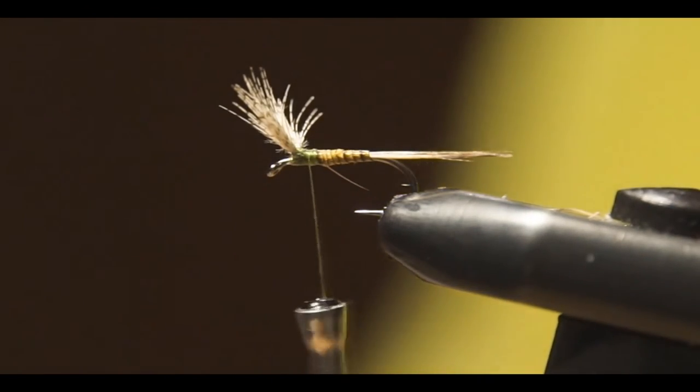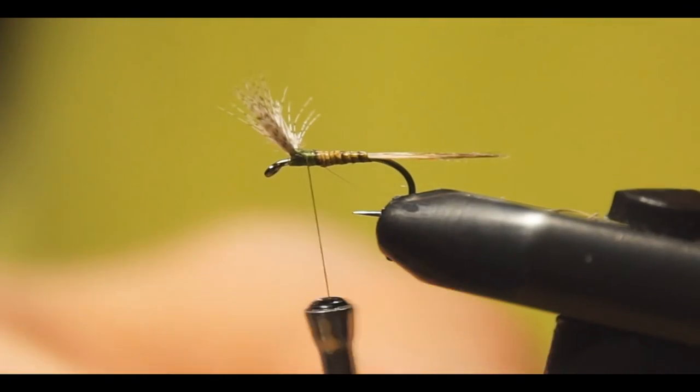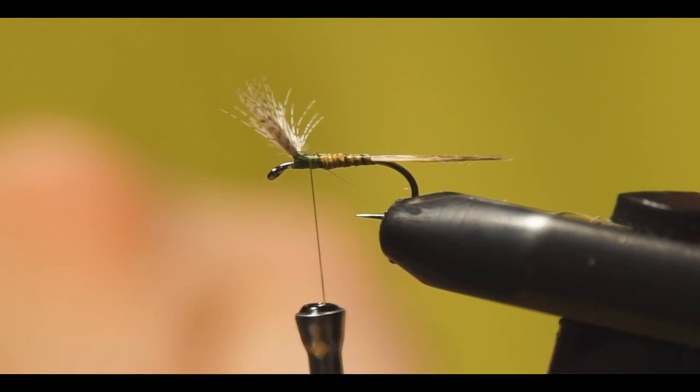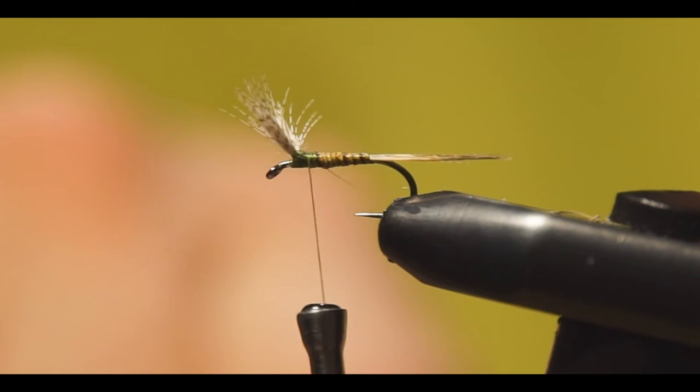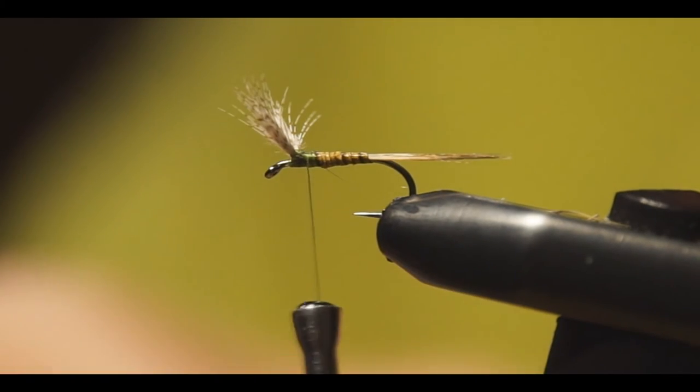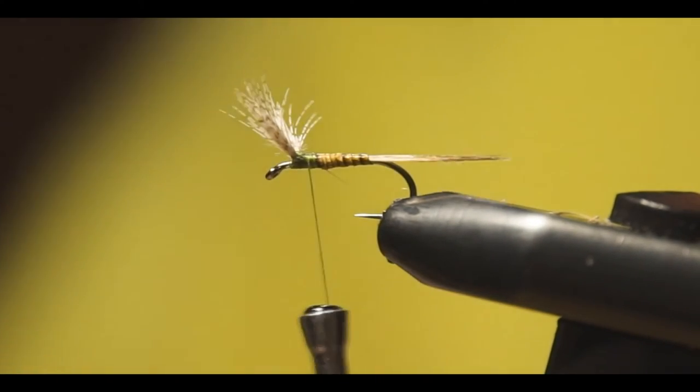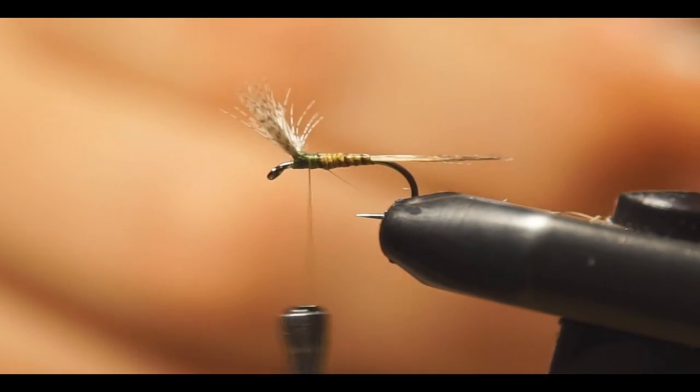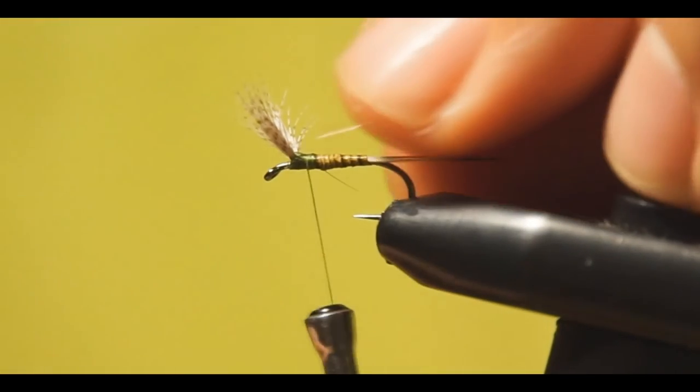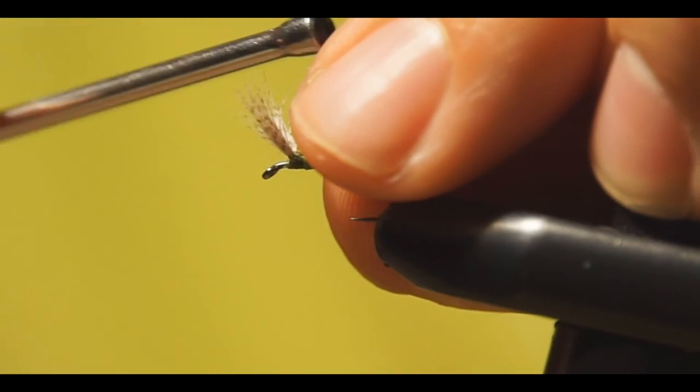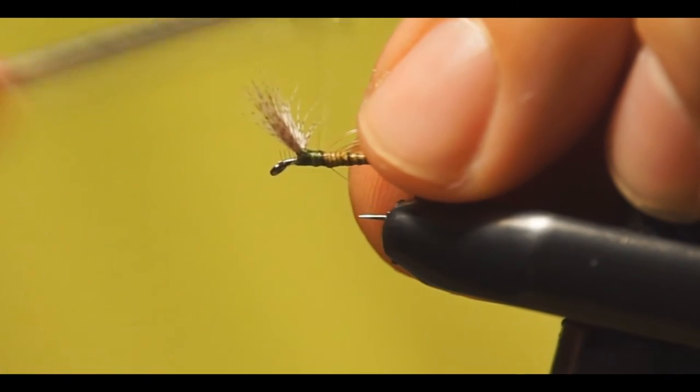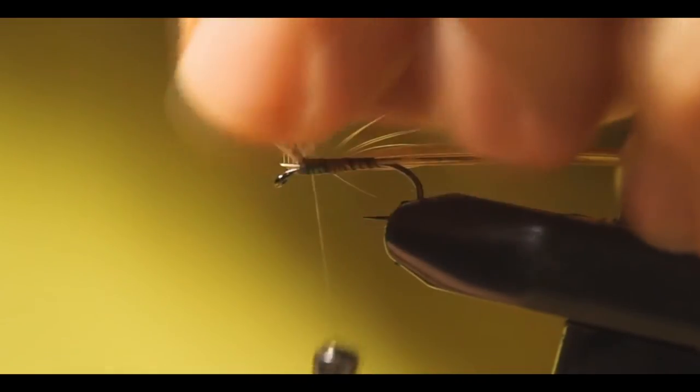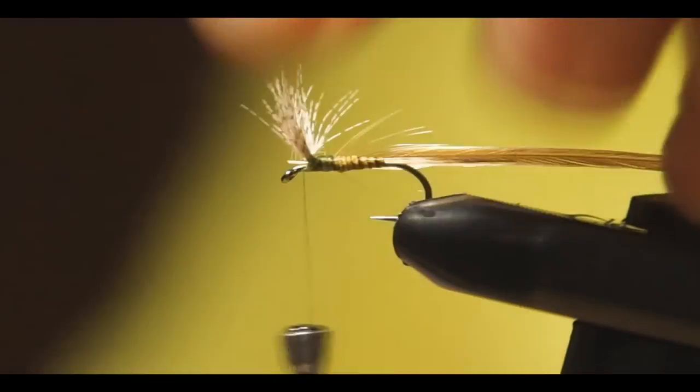Next step we'll get the hackle. I like to use ginger for this pattern, but you can use grizzly or whatever you have in your box. Cut the first few fibers so that you have some barbs which hold the hackle better in place. Jump in front, then we'll cut it.